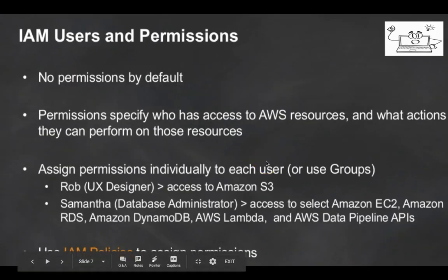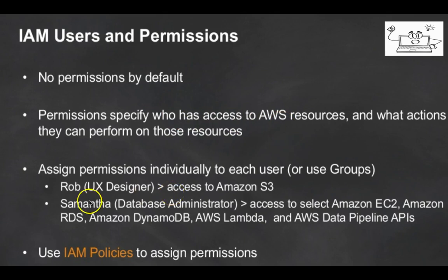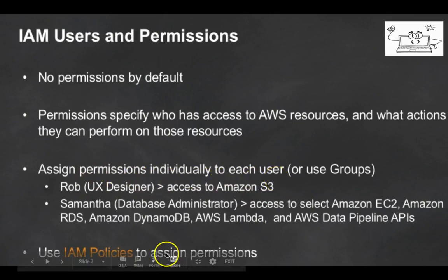Next are IAM permissions. There are no permissions by default — when you create IAM users for the first time, that user doesn't have any permissions. Permissions specify who has access to AWS resources and what actions they can perform on those resources. For example, Rob who is a UX designer needs access to the S3 bucket, so you provide Rob only access to S3 resources by assigning permissions individually using IAM policies.